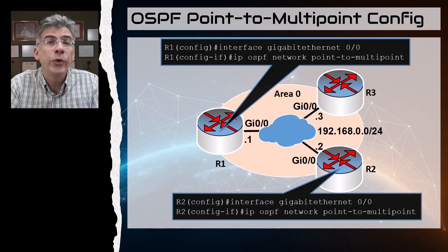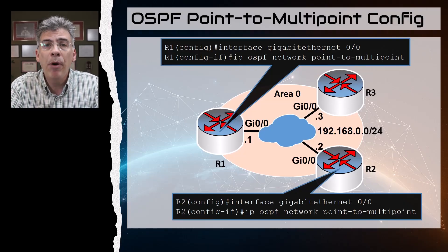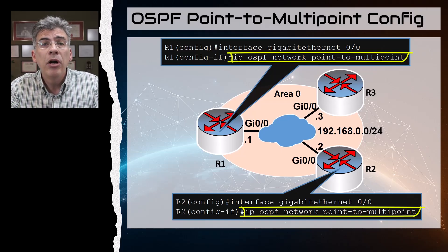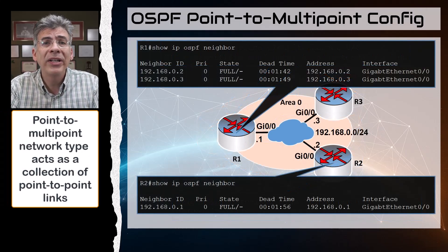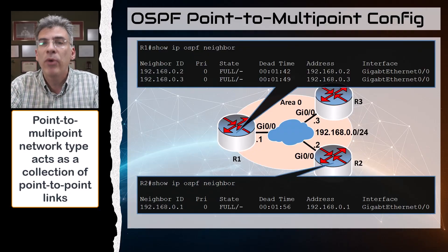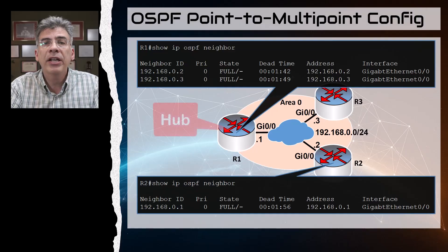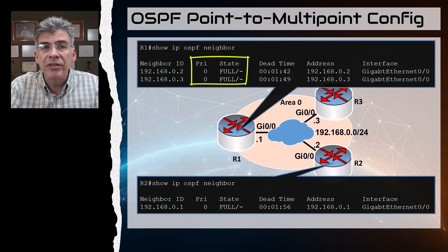Let's go on to the point-to-multipoint network type. I've modified the topology slightly: we now have three routers in a hub-and-spoke topology. R1 is our hub and R2 and R3 are spokes. There's a cloud here representing the network, which in our case is a switch, but we want to simulate an actual point-to-multipoint scenario. We apply this configuration to the interfaces — R3 would have the same configuration as R2. Point-to-multipoint network types simply act as a collection of point-to-point links resulting in a hub-and-spoke topology.